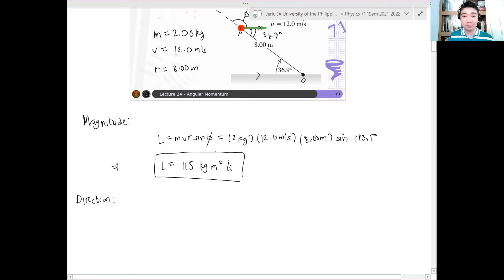Ano lang yan? Dapat? Negative P. Yes, it should be minus K hat. Thus, the total angular momentum is minus 115. Aha. Ulit. This is minus 115 K hat kilogram meter squared per second.